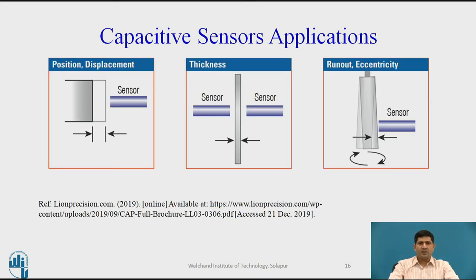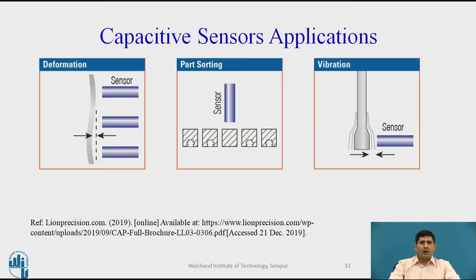General applications of capacitive sensors include position measurement, displacement measurement, measurement of thickness of plates in rolling mills, and measuring runout and eccentricity. Another application is measuring deformations and surface irregularities, overlapping with LVDT application areas. They are also used in part sorting to assess presence or absence of a part, and for vibration measurement, since capacitive sensors support dynamic measurement with a wider application range than LVDTs.